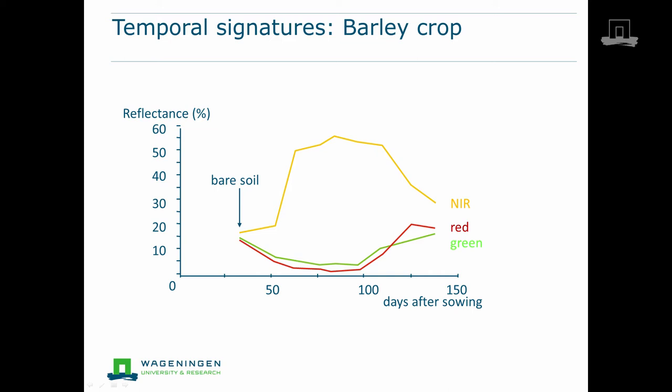The crop then starts to grow and produces green biomass until a maximum is reached at about day 100. With increasing amount of biomass, the reflectance in the green and red decrease, with the strongest decrease in the red because absorption by green pigments there is the strongest. As opposed to that trend, the near infrared reflectance increases with increasing amount of green vegetation.